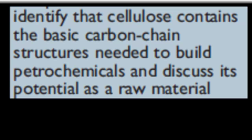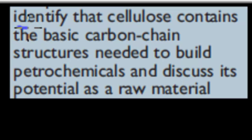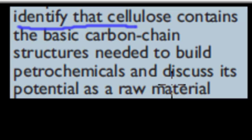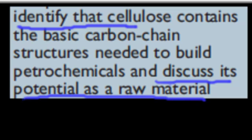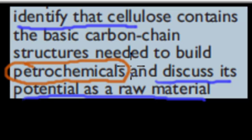In this video, we're going to cover the next tool point, which says: identify that cellulose contains the basic carbon chain structures needed to build petrochemicals and discuss its potential as a raw material. A petrochemical is any chemical which is derived or produced from petroleum.